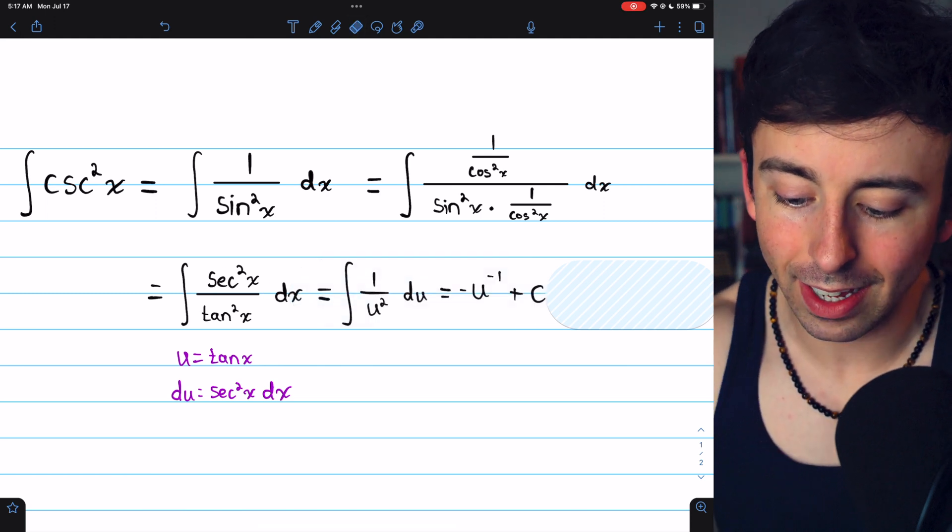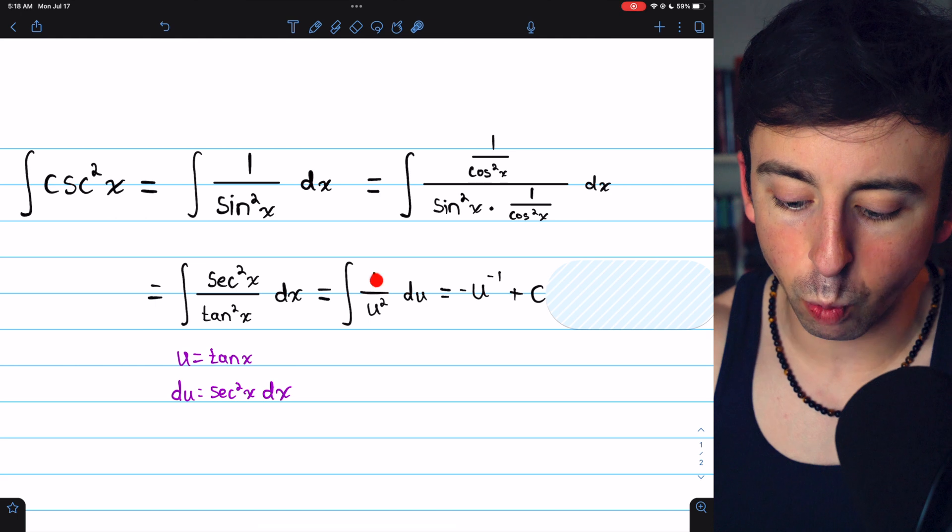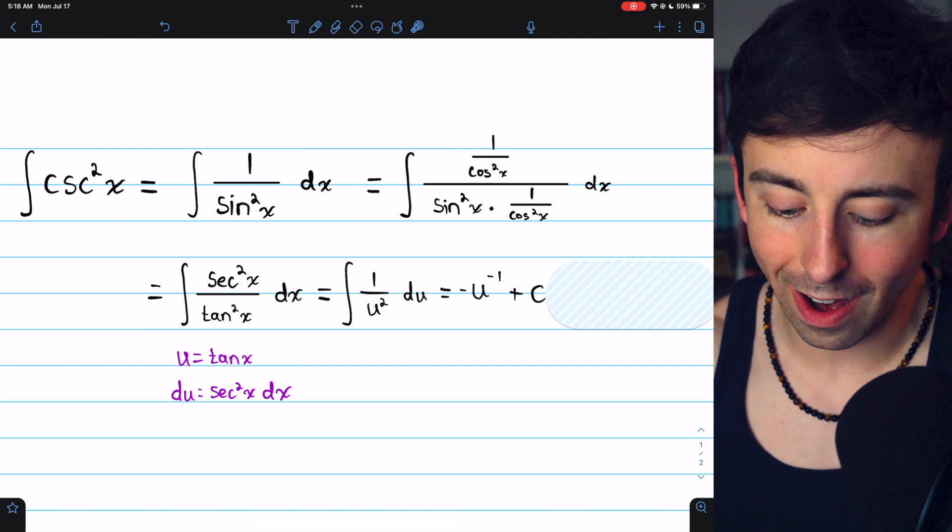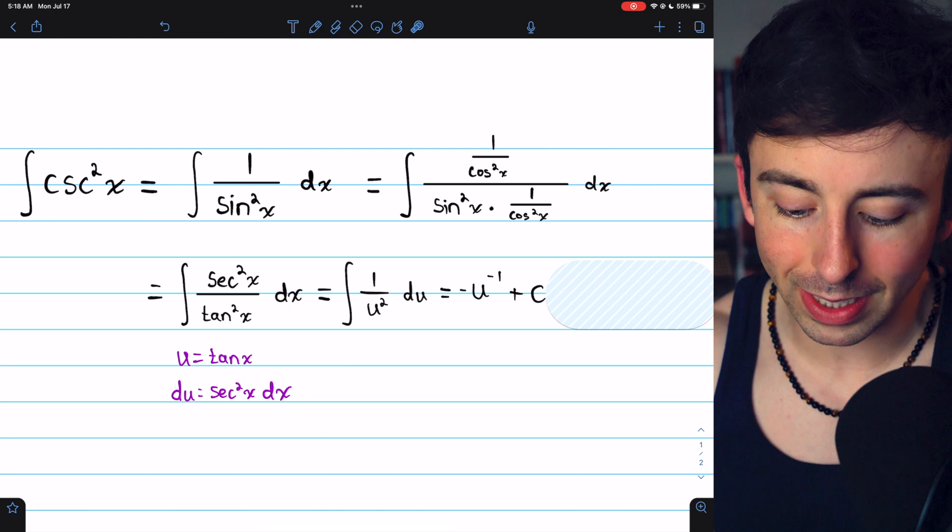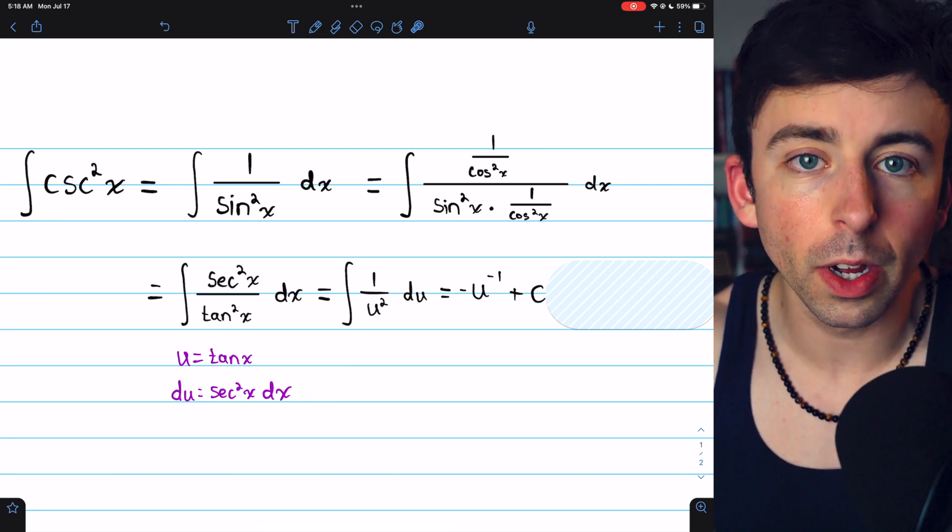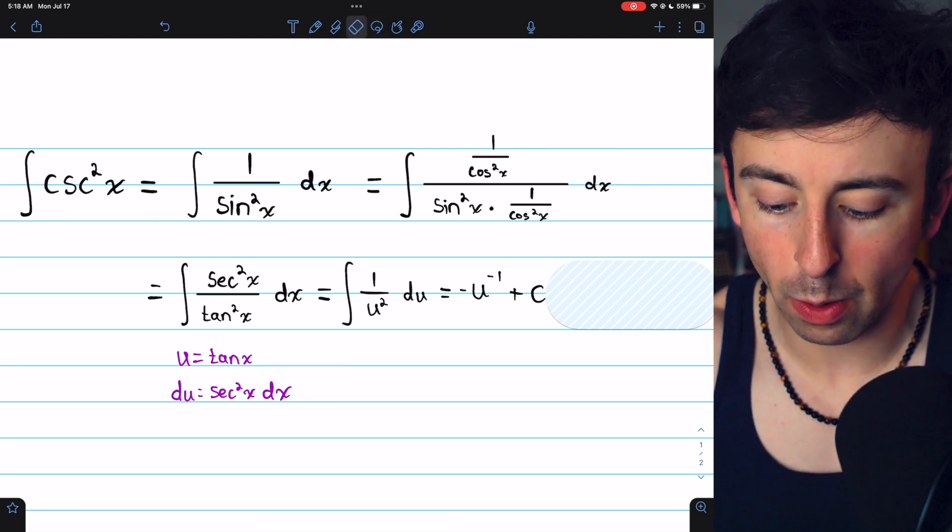So what we have then is the integral of 1 over u squared. Secant squared dx is completely replaced by du, then we can just apply the power rule.